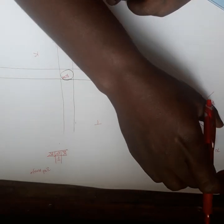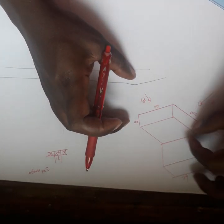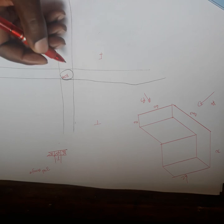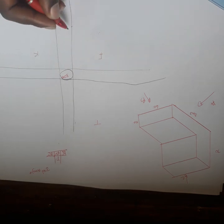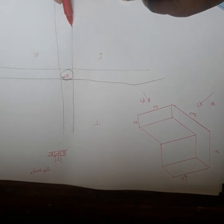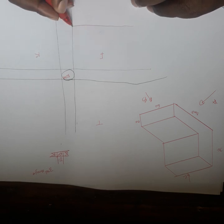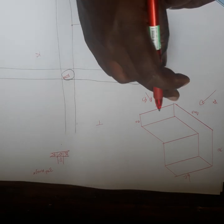First of all, the total height of the sketch is 70. Total height of the sketch is 70, so from here to here I'm going to measure 70. Then after I draw the line going this side, from here to here it's 140.